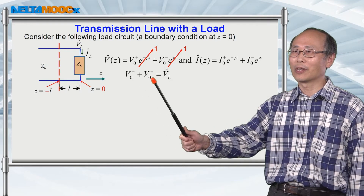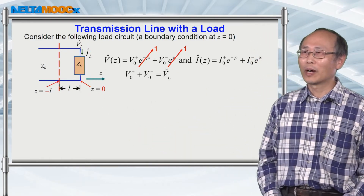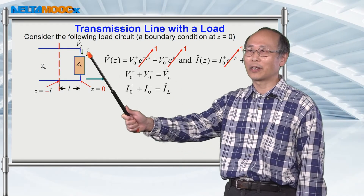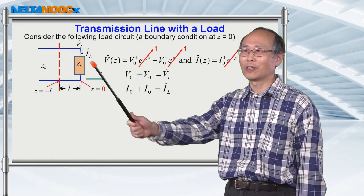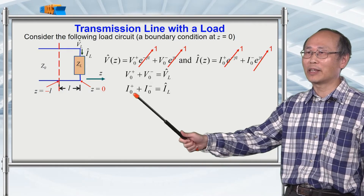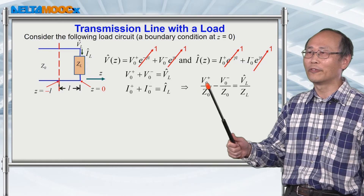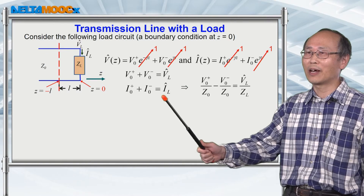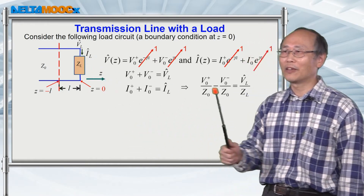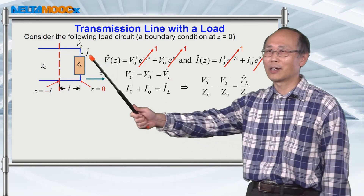If you sum the forward and backward voltages together at this point, it's going to be equal to the total voltage across this load. You can do the same thing for the current expression, where on the right-hand side you will have the load current as the linear superposition of the forward current and backward current at this point. Previously, we already defined the characteristic impedance connecting the forward voltage to forward current and backward voltage to backward current, so we can convert the current into forward voltage and backward voltage. The current at the load is equal to the load voltage divided by the load impedance, generating two expressions governing the signal on this load impedance.